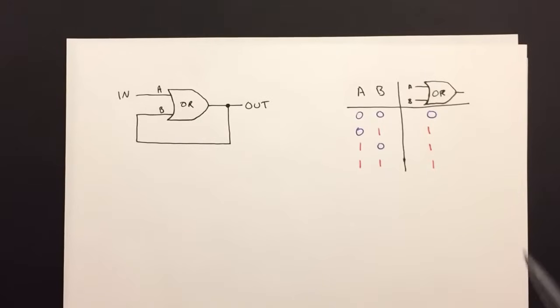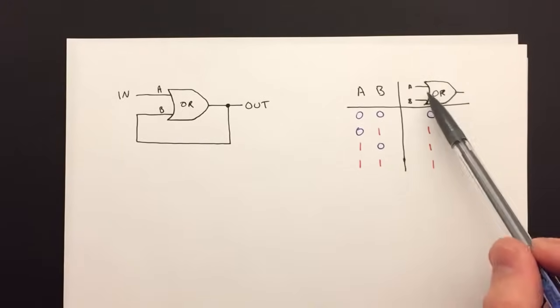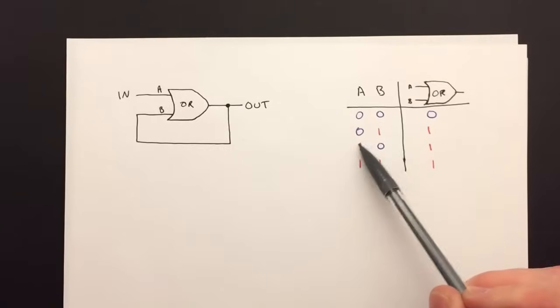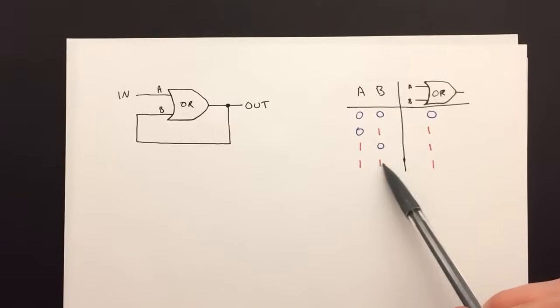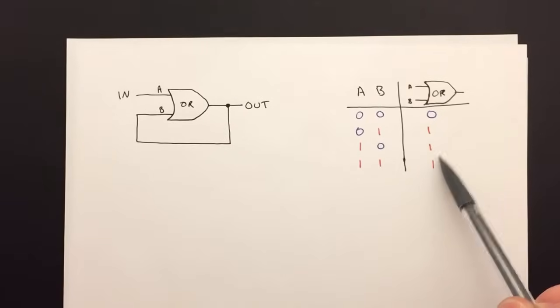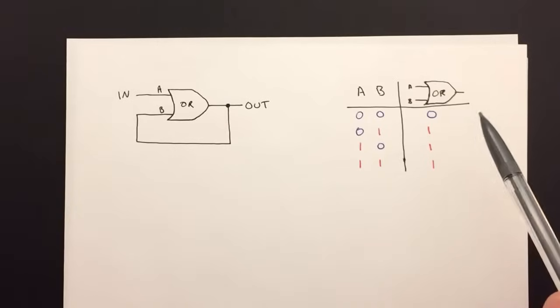In previous videos, we've looked at the OR gate. If you remember, in this case we have two inputs. If one input or the other, or both, are on, then the output is on. Otherwise, the output is off.